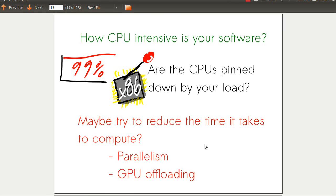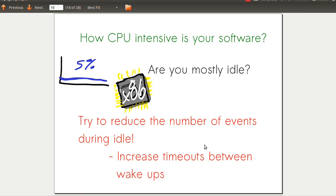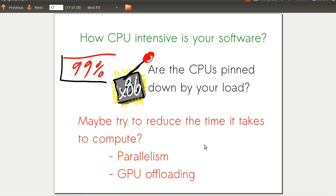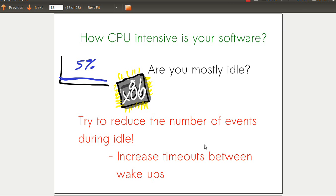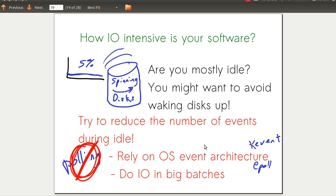Here's some general advice. If your software is CPU intensive, try to reduce the amount of time it's running. If your software is mostly idle, make sure your idle events don't have a lot of wake-ups and you're not asking to be rescheduled often. If you're idle, stay idle. Furthermore, if you're idle in terms of disk IO, try to reduce the number of events. Avoid waking up disks - spinning disks often go to sleep and waking them up costs a lot more power.